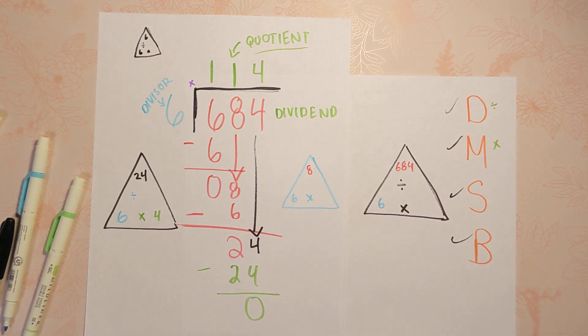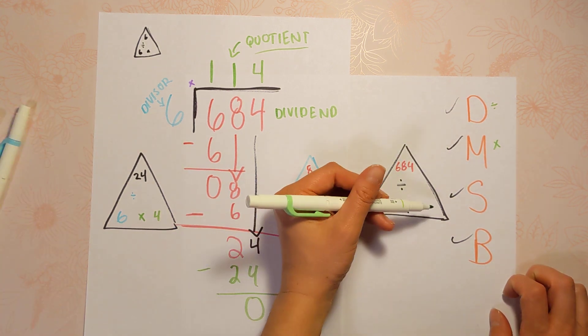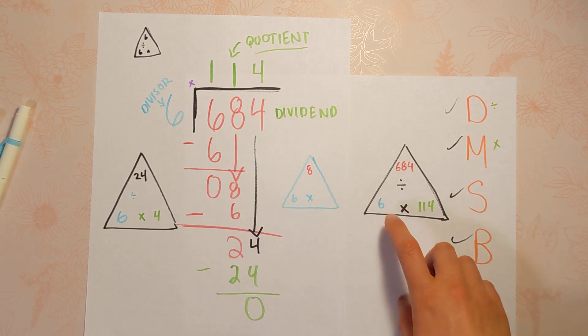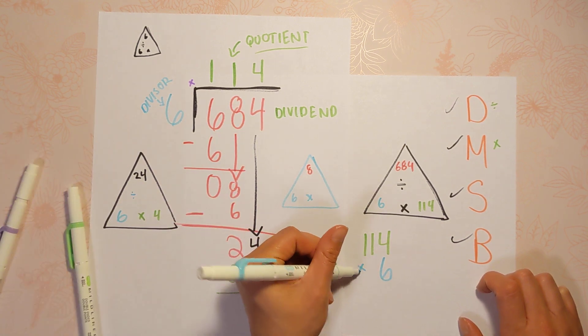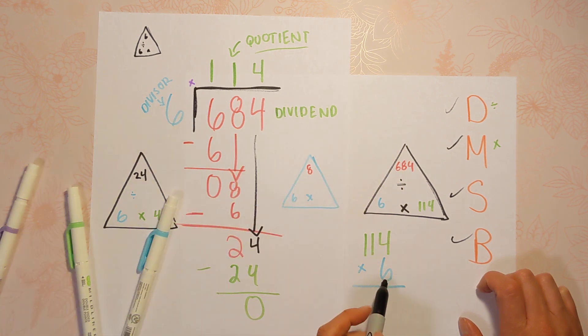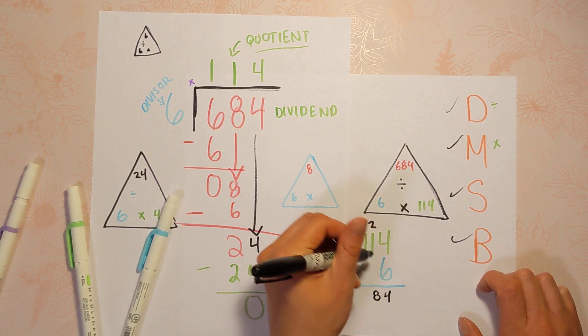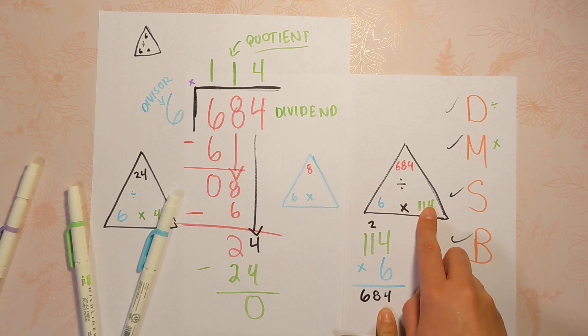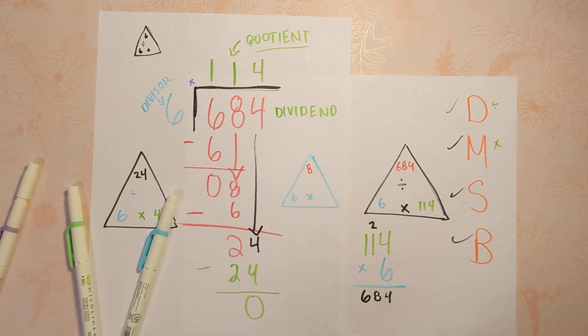But especially if you're new to long division, I need you to check it, slash prove it. So here's what I mean. We said 684 divided by six was 114. Well, if you're right, if that's true, then six times 114 better be 684. So I want you to check your work. So let's do that. 114 times six, and we can check it with any strategy. But I'm going to use a standard algorithm. Six times four is 24. Six times one is six plus two is eight. Six times one is six. There we go. Six times 114 is 684. And 684 divided by six is 114. And that's how you use the standard algorithm.